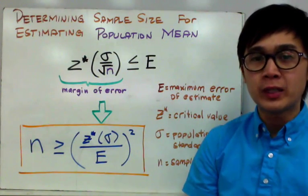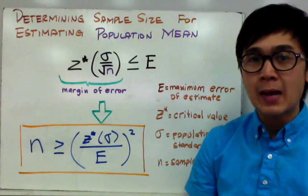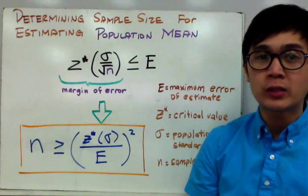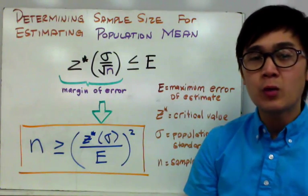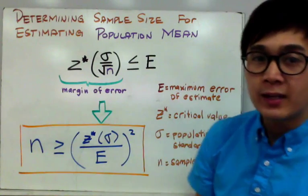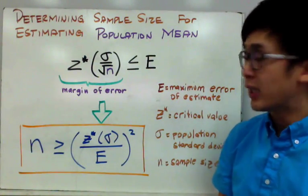How big of a sample do we need to make sure that our sample can accurately describe our population parameter? That's what we're going to learn in today's lesson: how to determine the sample size or minimum sample size in estimating our population mean in our confidence interval.